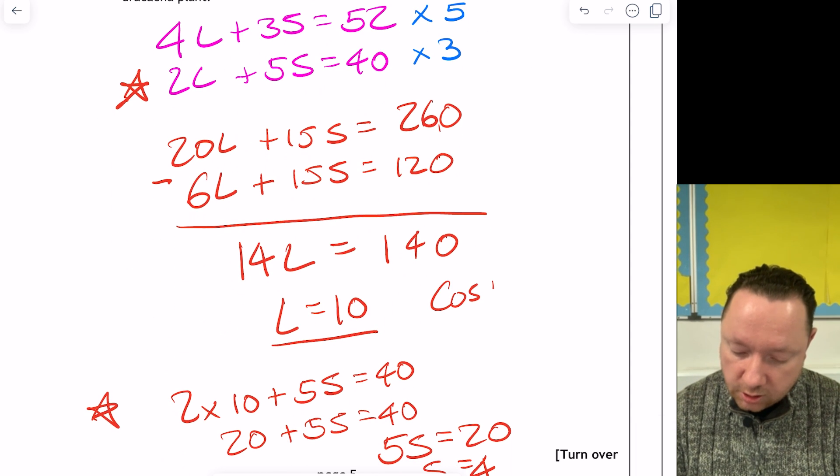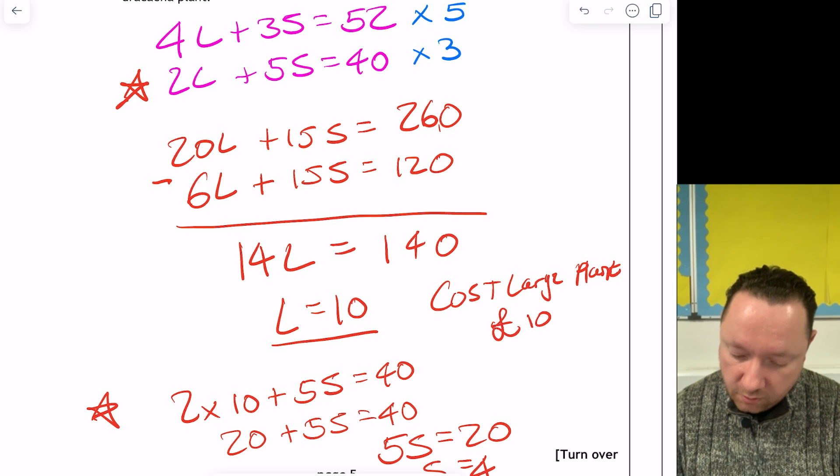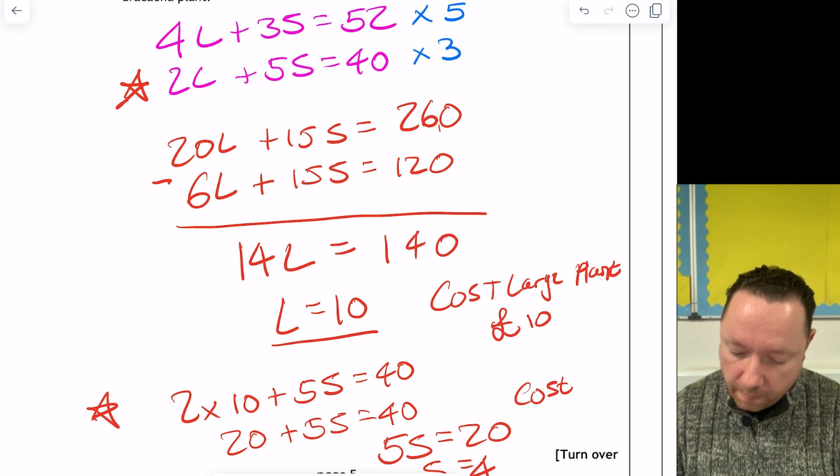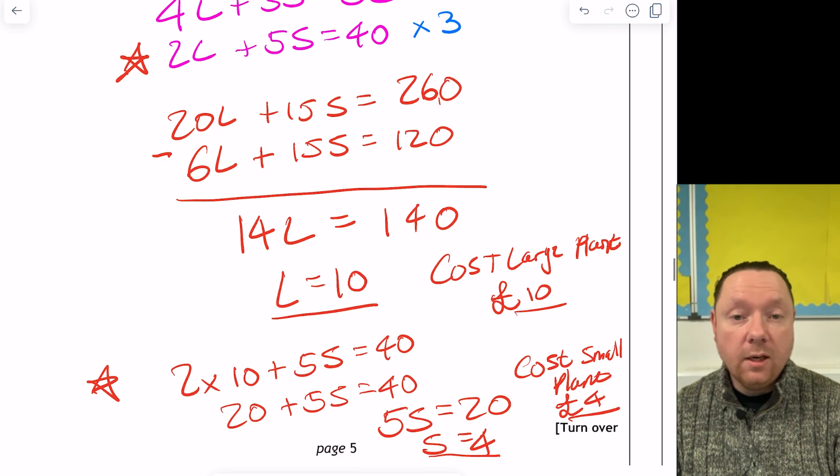It says find the cost of a large and a small. So cost of large plant is £10. And the cost of a small plant is £4.